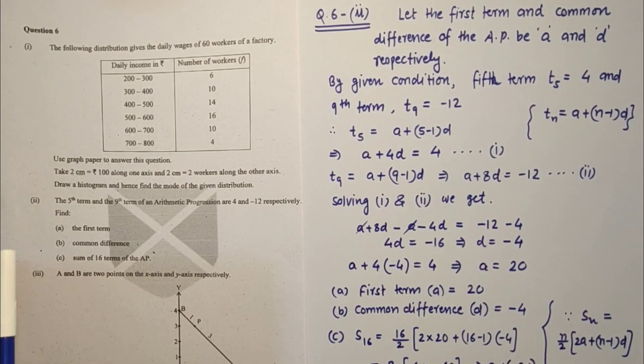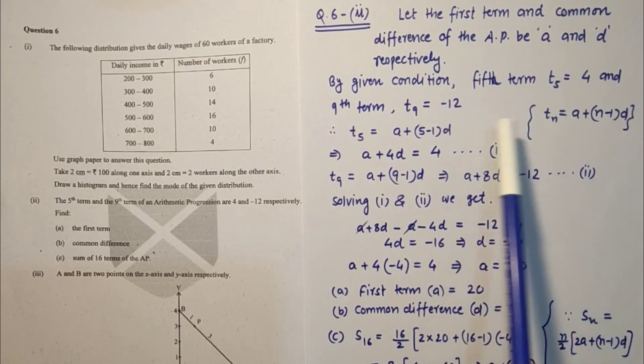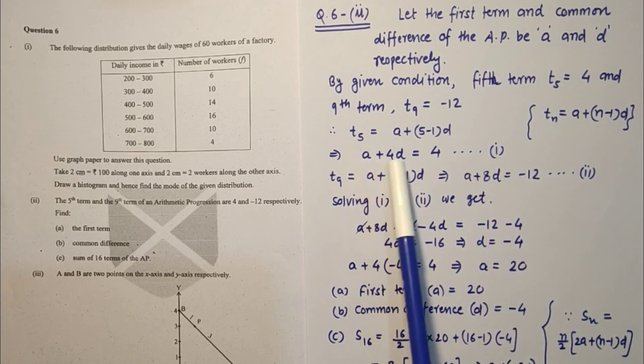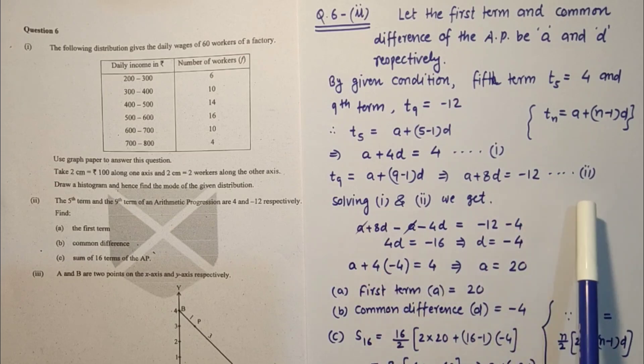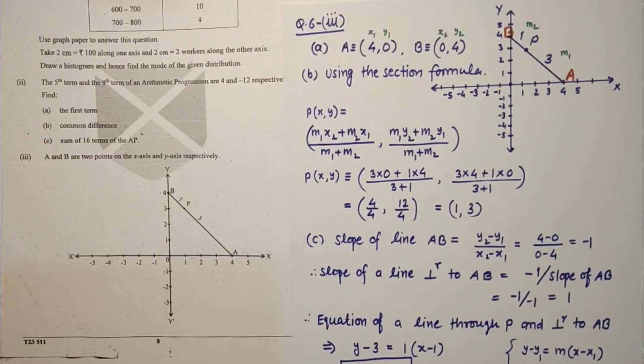Question number 6 second sub part. Find the 5th and 9th term of the arithmetic progression given as 4 and minus 12 respectively. We have to find the first term, common difference, and sum of 16 terms. Let first term and common difference be A and D respectively. By condition given, A plus 4D equals 4 and A plus 8D is minus 12. Solving these two we will get A as 20 and common difference D as minus 4. Sum of 16 terms is coming minus 160.